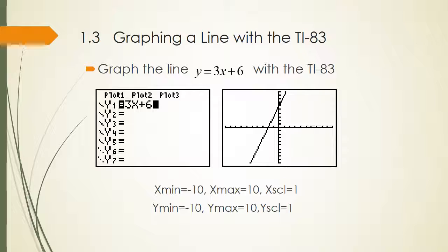When graphing a line with your graphing calculator — either TI-83 or 84 — you go to the y equals menu, and under y1 you put in 3x plus 6, then hit graph. This viewing window has a minimum and maximum value of negative 10 and 10 for both x and y.